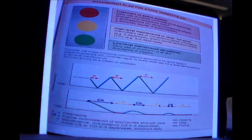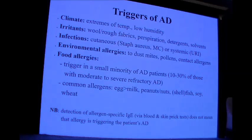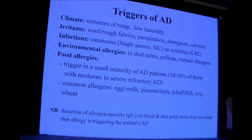The triggers of atopic dermatitis include extremes of temperature — very high and very low — and low humidity, which is why we recommend humidifiers in dry weather. Irritants such as wool, rough fabric, excess perspiration in summer, detergents, and solvents also trigger disease. Infections precipitate atopic dermatitis, including Staph aureus, molluscum contagiosum, and systemic infections such as upper respiratory tract infections.